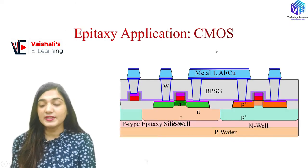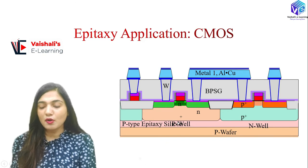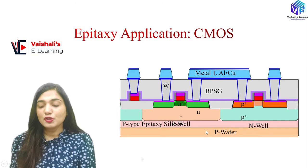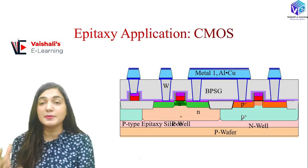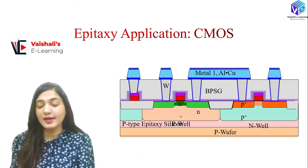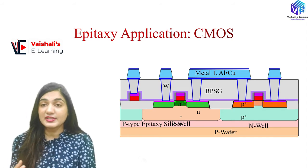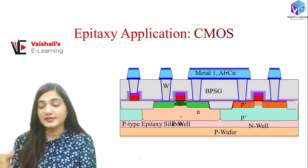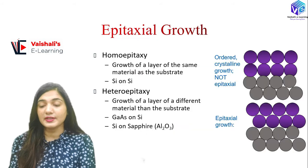In CMOS fabrication, a P-type epitaxial layer is grown on the P-type wafer. The N-well and P-well are made within this P-type epitaxial layer. So CMOS fabrication is done in the P-type epitaxial layer. The epitaxial layer is very thin compared to the wafer thickness.